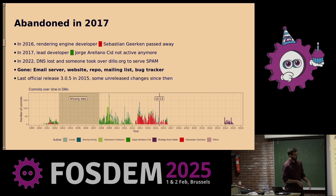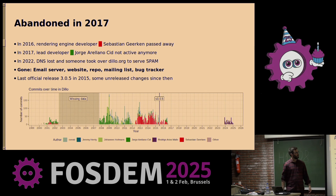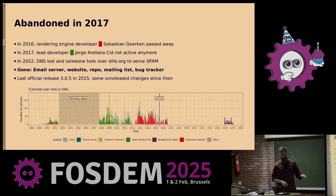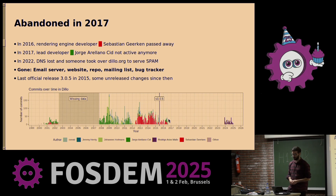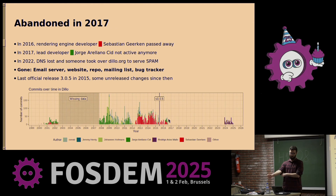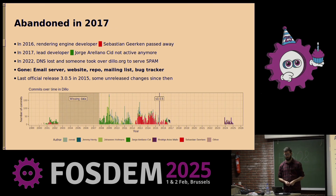So what happened with the project? You can see here the number of commits over time — we still have some missing data that we could not recover. In 2016, Sebastian, who was the main rendering engine developer, passed away around this line here. And you can see that after that time, Jorge, the lead developer since the beginning of the project, stopped being active, and so the project kind of halted there. A bit later, we lost the DNS, and with that we lost the email system, the website, the repo, the mailing list, the bug tracker — so everything went.